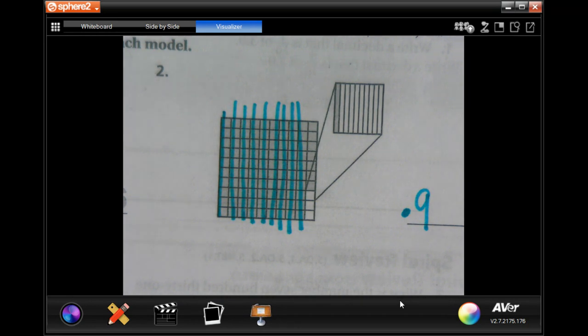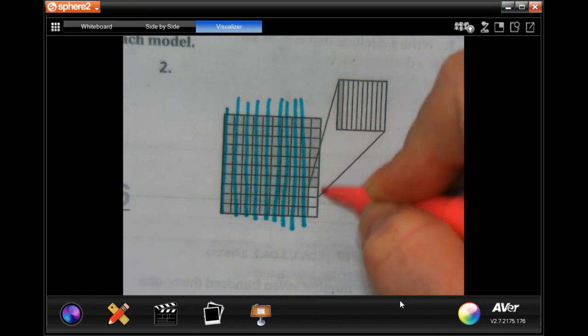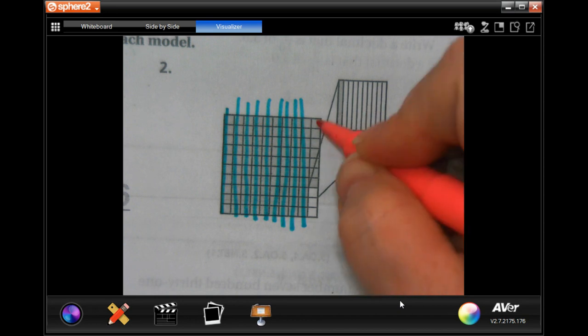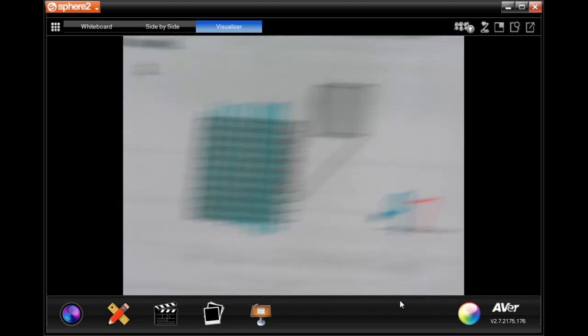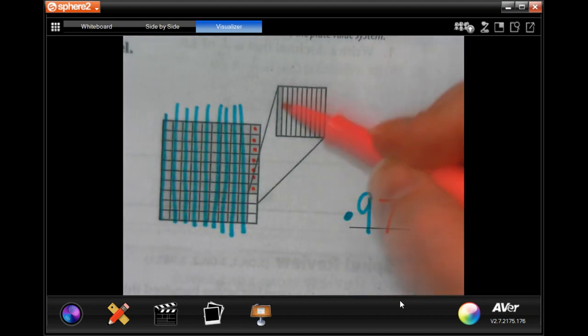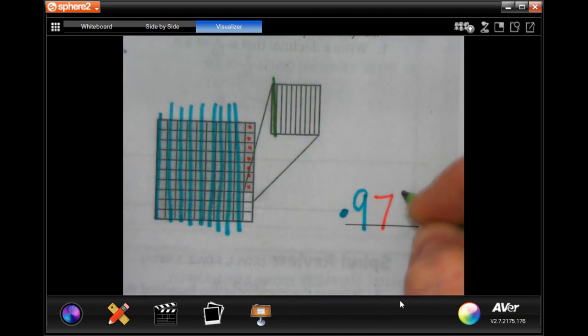Your second number is going to be how many of these are filled in before we get to the one that's up here that's magnified. One, two, three, four, five, six, seven. Your last number is going to be how many of these guys are filled in, and in this case it's just the one. So point nine seven one.